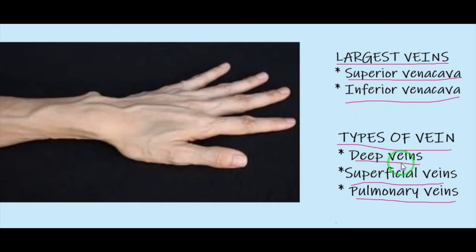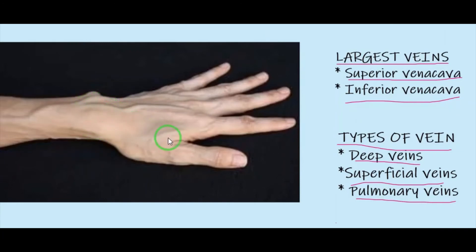Deep veins are located within the muscle tissue. Superficial veins are closer to the skin surface — just look at your hand and you can find superficial veins. Pulmonary veins transport blood filled with oxygen from the lungs to the heart.